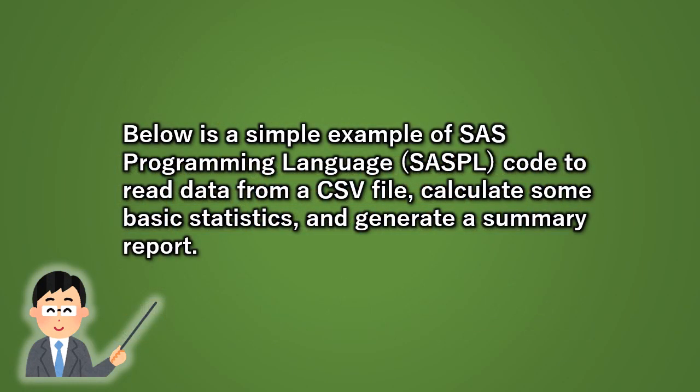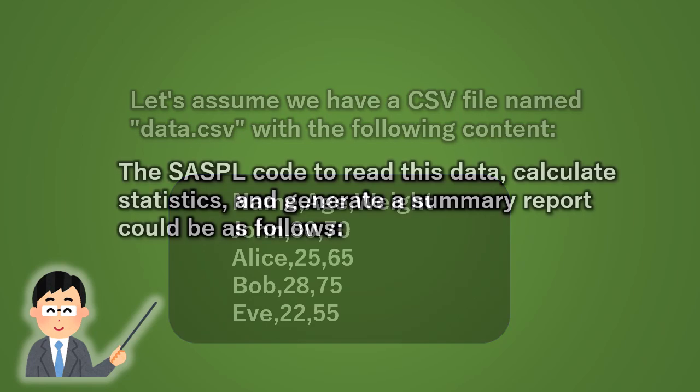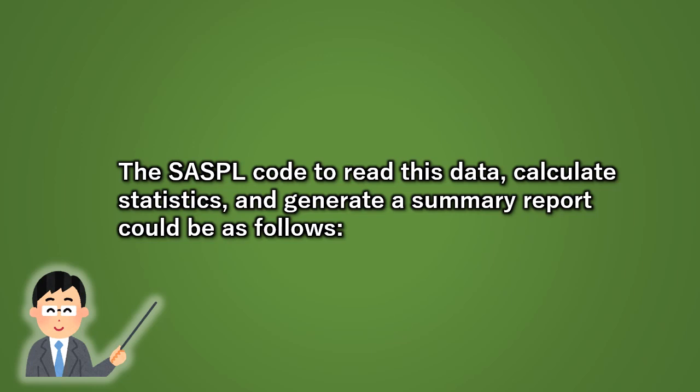Below is a simple example of SAS Programming Language (SAS PL) code to read data from a CSV file, calculate some basic statistics, and generate a summary report. Let's assume we have a CSV file named data.csv. The SAS PL code to read this data, calculate statistics, and generate a summary report could be as follows.